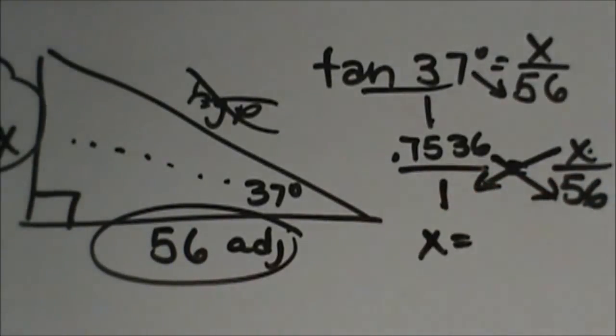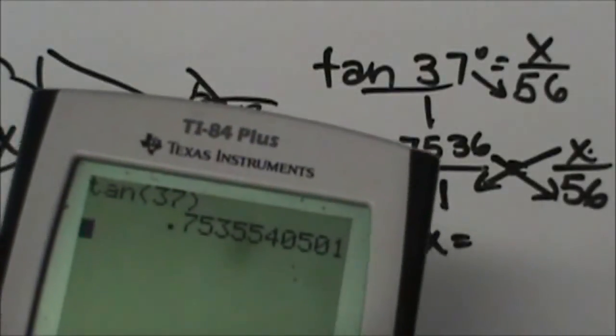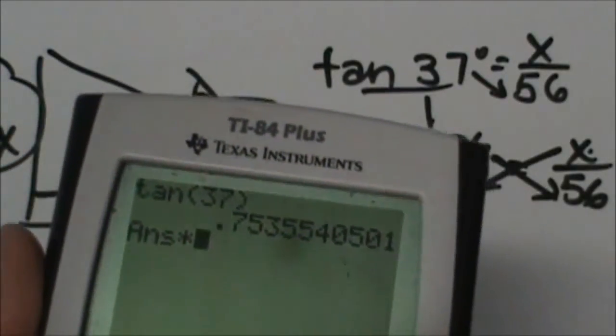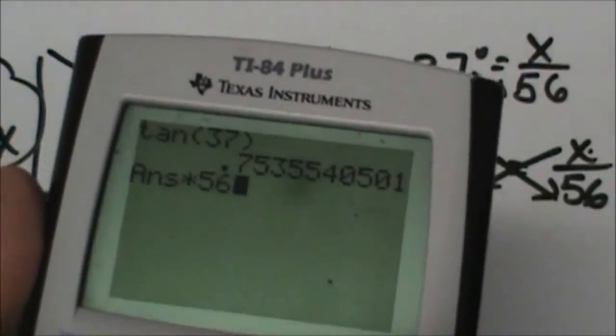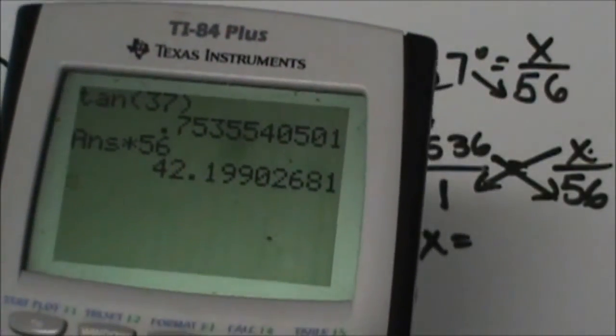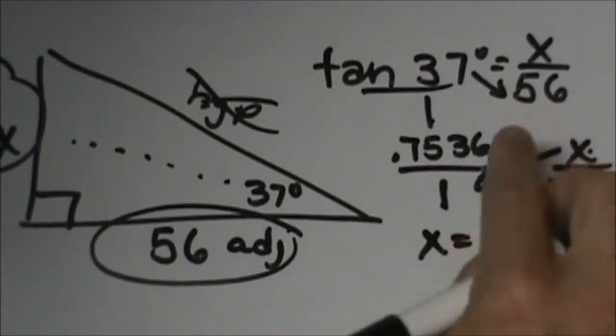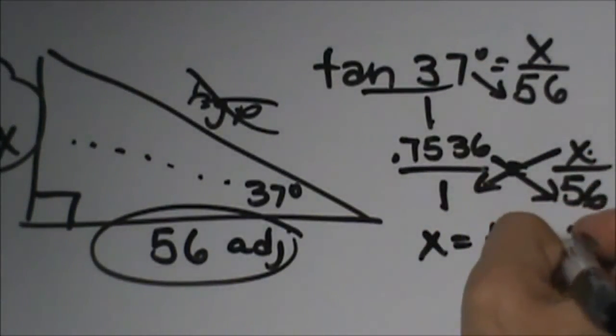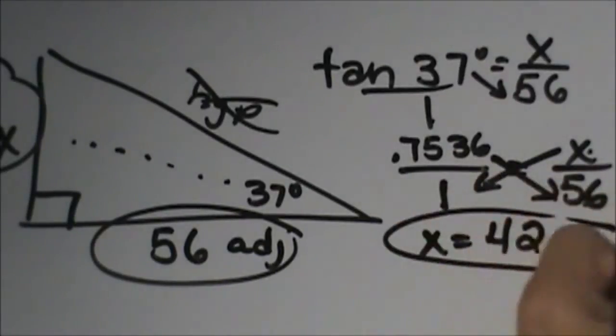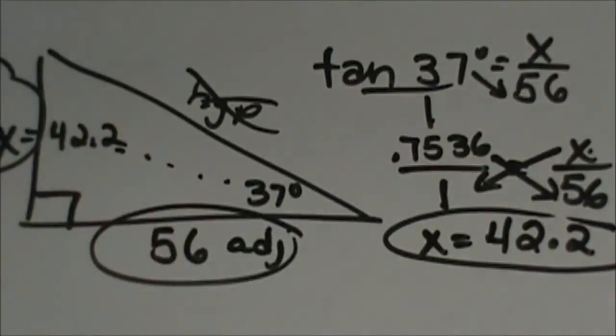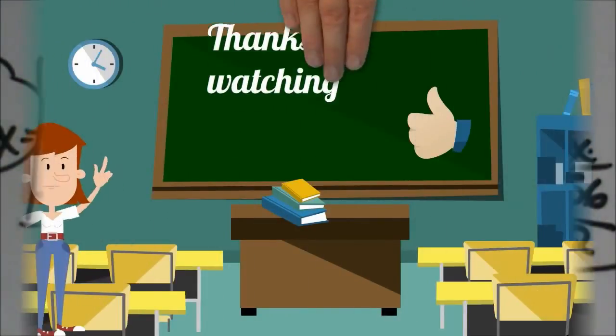And then 0.7536 times 56 is 42.2, so x equals 42.2, and that is how long this side is over here. And there you go, that is how you find that missing side.